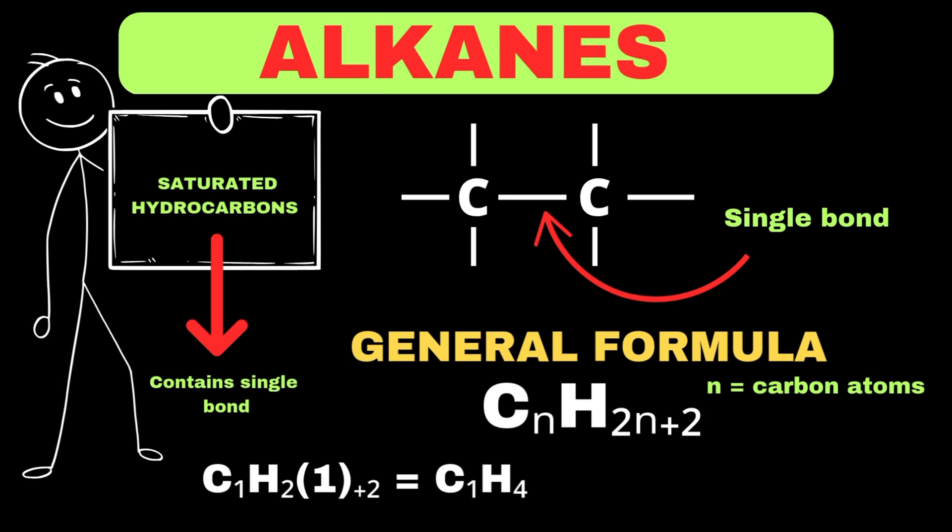If we apply this formula when n is equal to 2, we will get C2H6, which is called ethane. By applying the same formula for any number of carbon atoms, we can find out how many hydrogens will be present in each case.